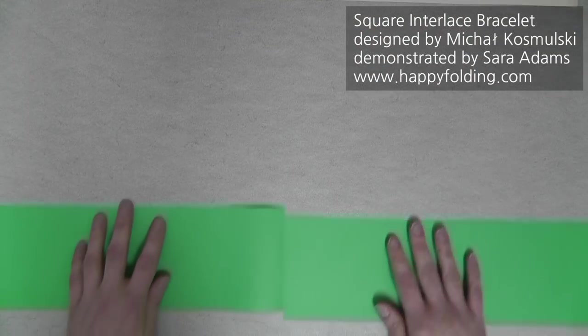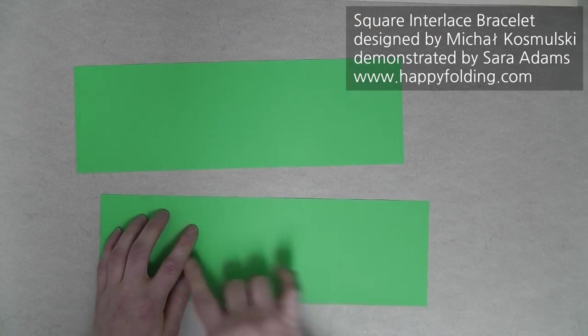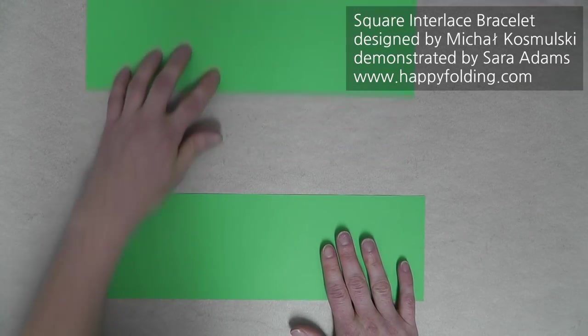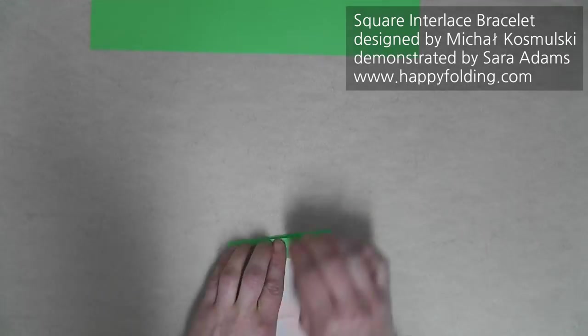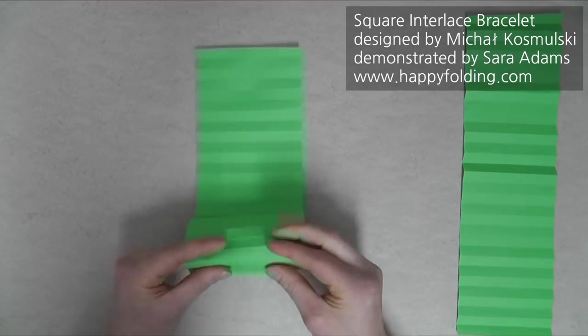But as I have two strips here, I'm actually going to fold a 10 by 32 division grid, because it's a bit easier to work with. Folding a grid with 32 divisions is quite easy, but if you're unsure how to divide into 32, I have a tutorial showing you that in detail.